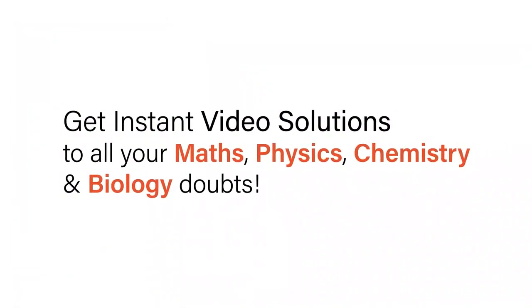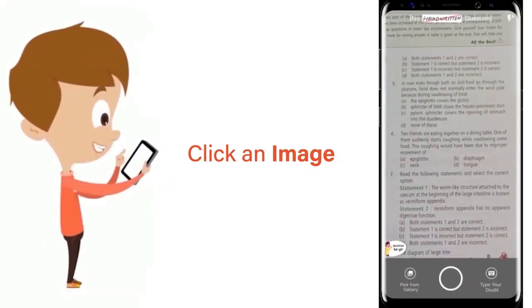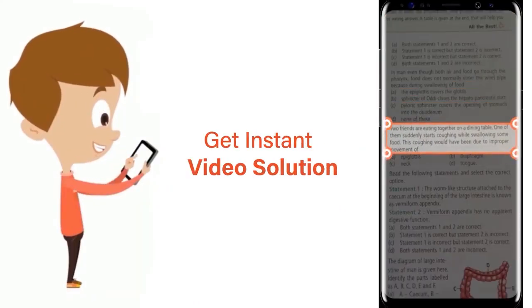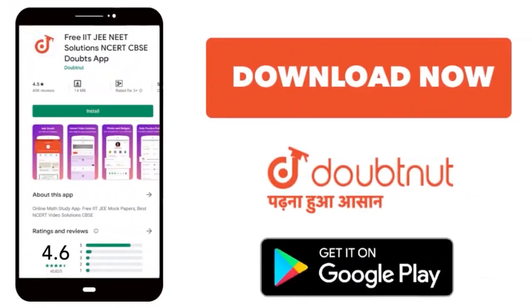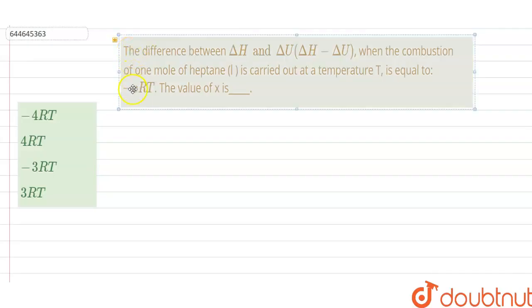With Doubtnut, get instant video solutions to all your maths, physics, chemistry and biology doubts. Just click the image of the question, crop the question and get instant video solution. Download Doubtnut app today. Hello, so our question is the difference between delta H and delta U.